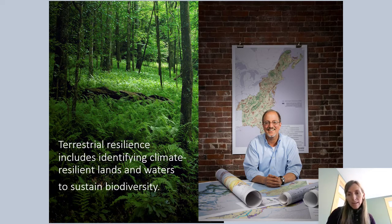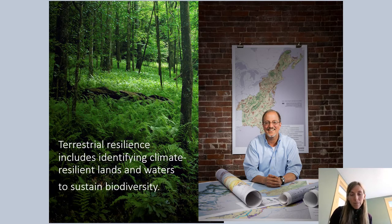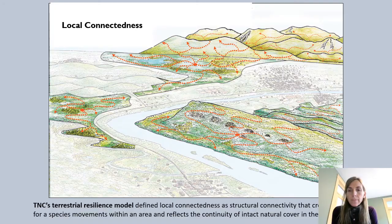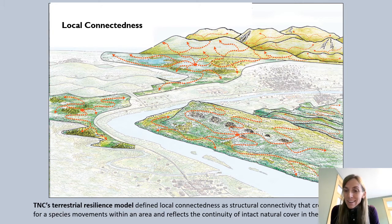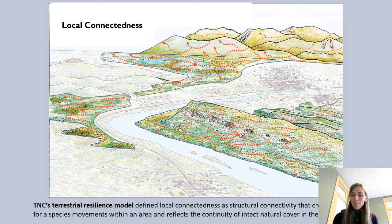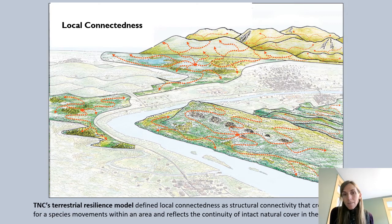It is a biodiversity-focused analysis. It really doesn't apply principles about human community resilience to climate change, and that's something we have to remind folks who apply this model. The main tenets TNC applied in their definition of terrestrial resilience are that we need landscape diversity — different soil types, different landforms — in order to give various organisms options for movement locally.